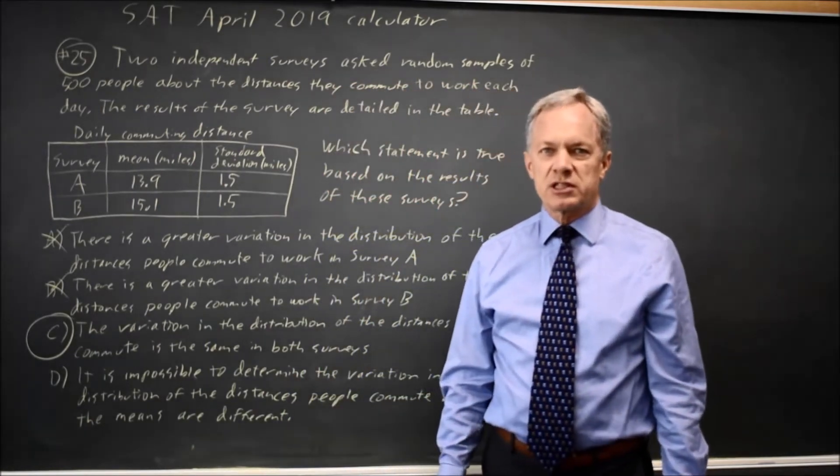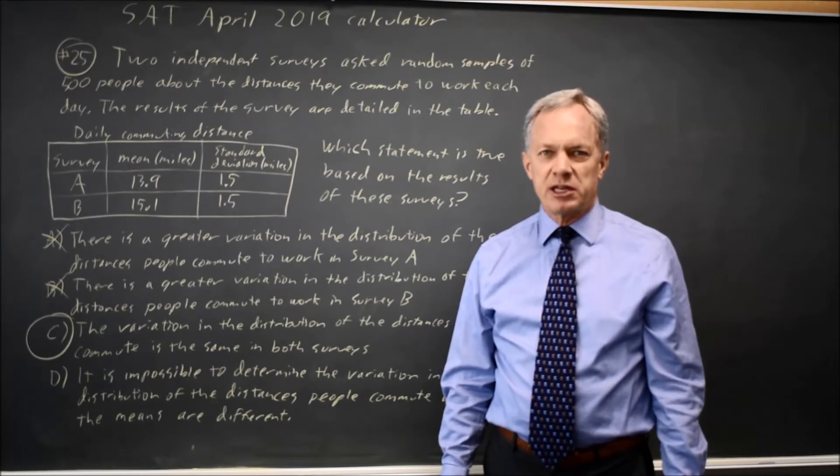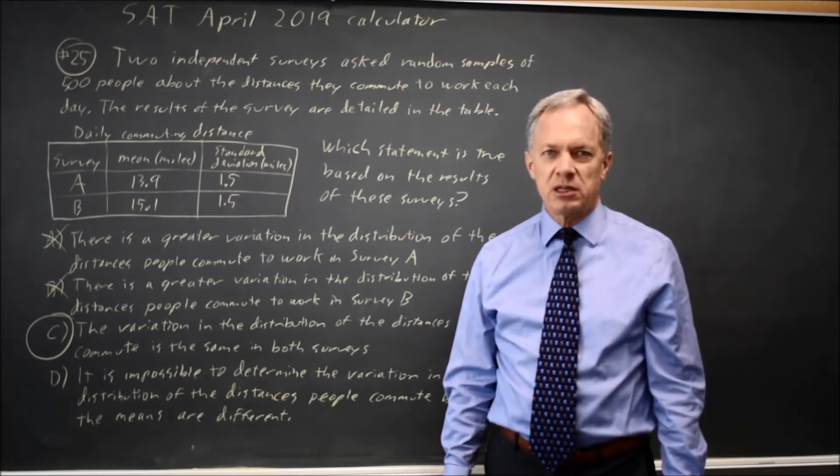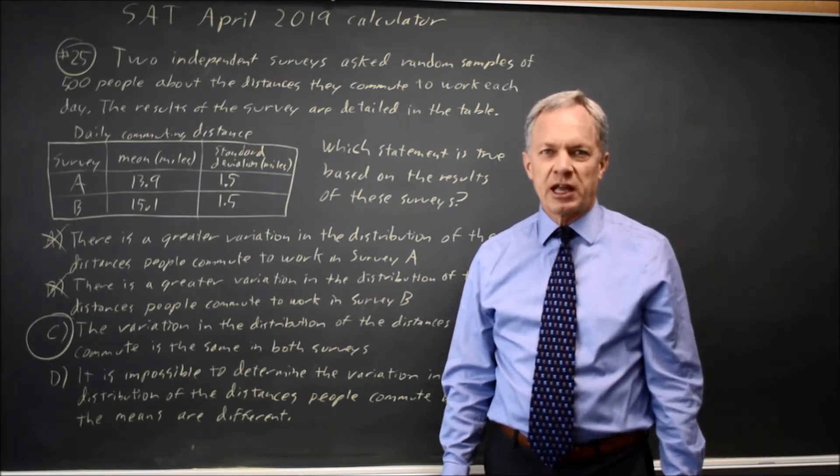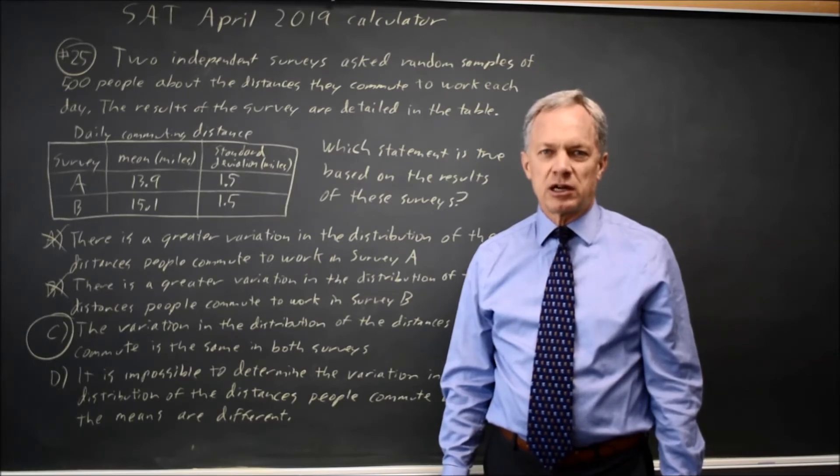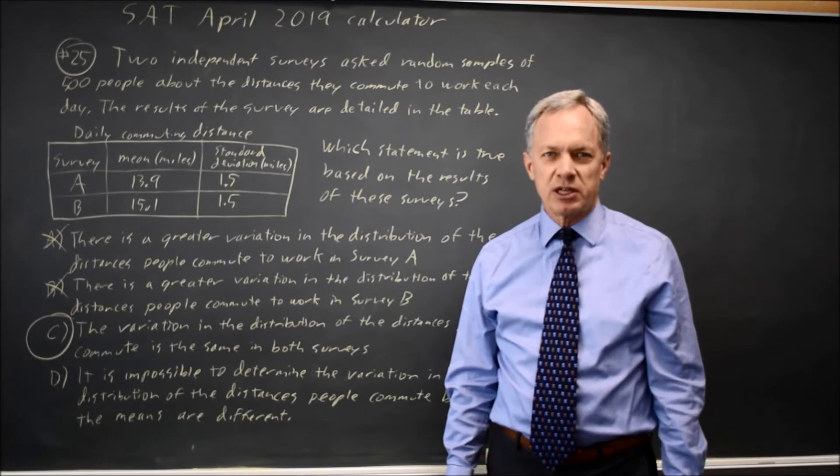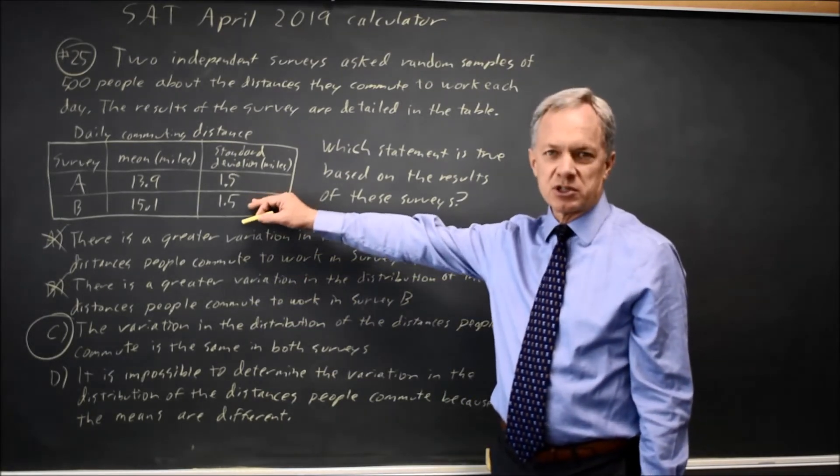We have several measures for the center of the distribution. That would be the median, which is the middle number when you sort them from smallest to largest, or the mean, which is what you get when you add up all the values and then divide by the number of observations. We also have different measures for the spread of the survey, or the variation, and that includes the interquartile range on a box plot, that's from quartile 1 to quartile 3, or the standard deviation in this particular pair of surveys.